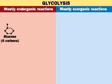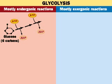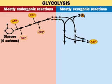In glycolysis, the 6-carbon sugar glucose undergoes a series of reactions, two of which require ATP, producing two molecules of a 3-carbon compound. In subsequent reactions, two molecules of ATP are produced for each molecule of glucose that enters the pathway.